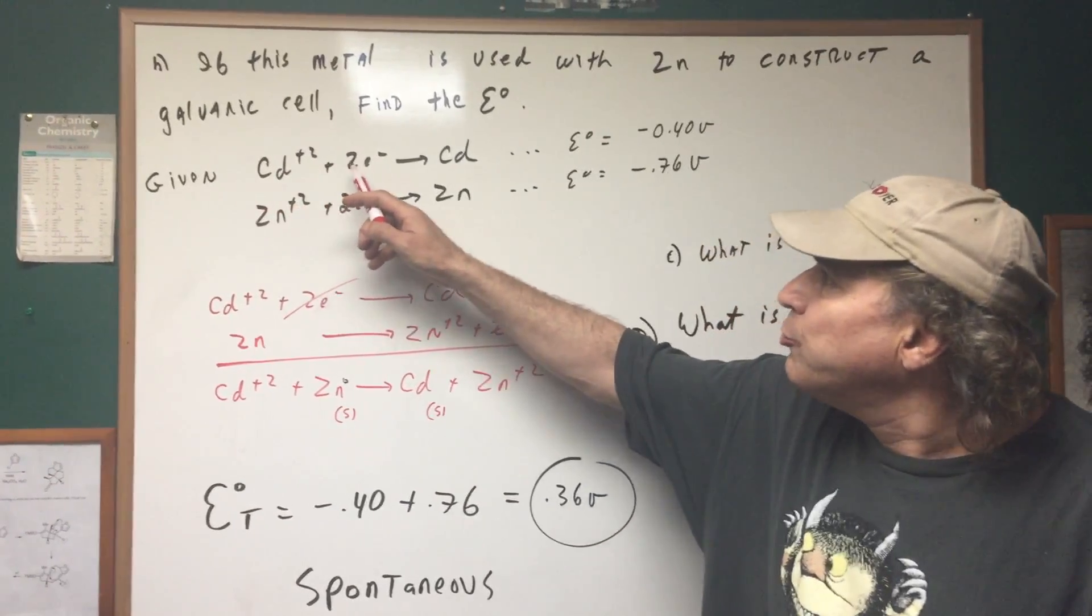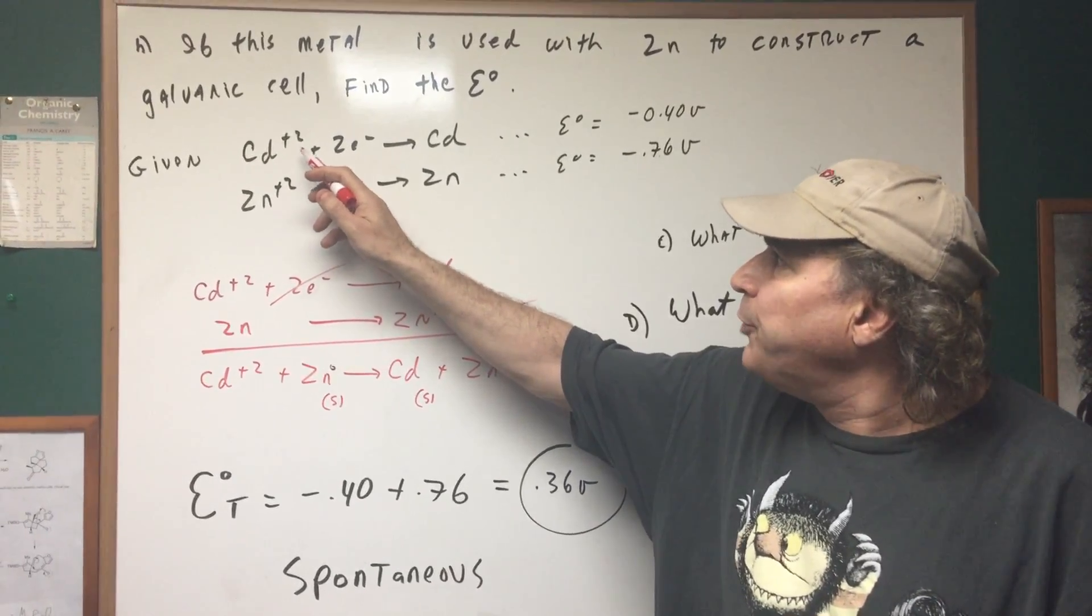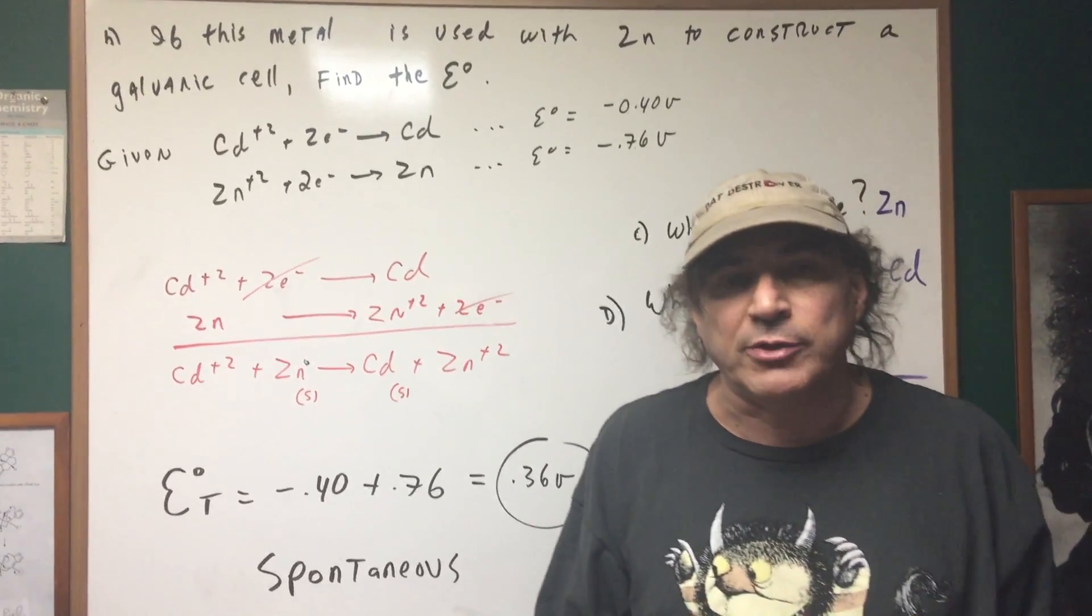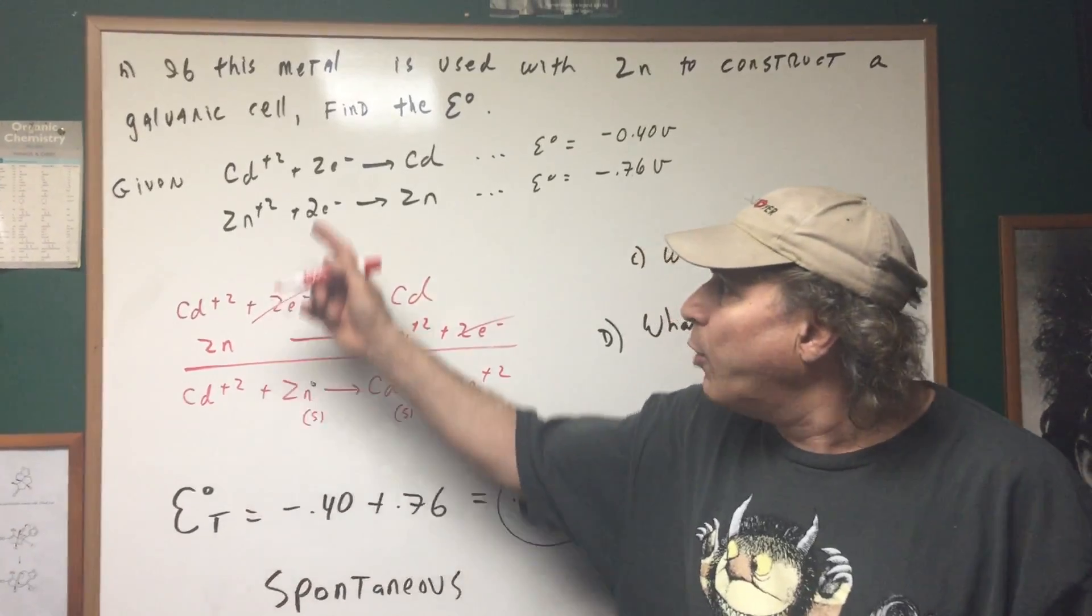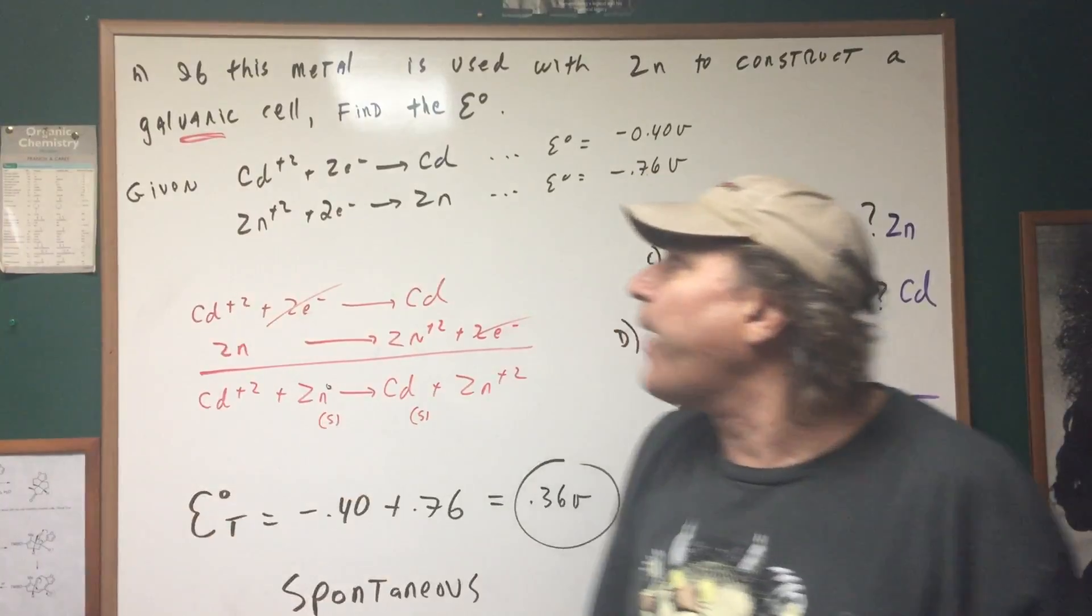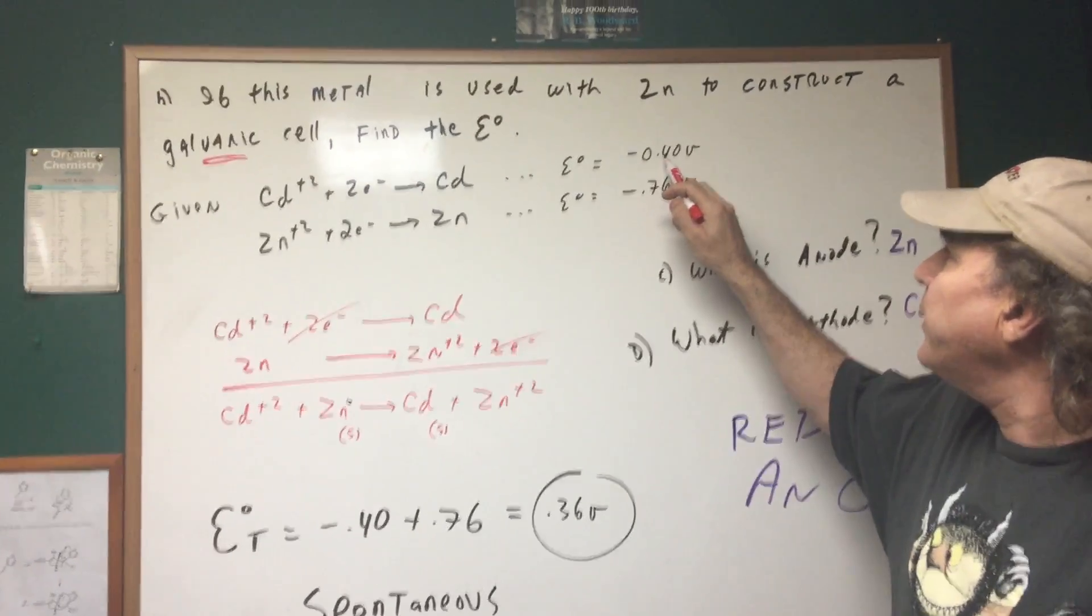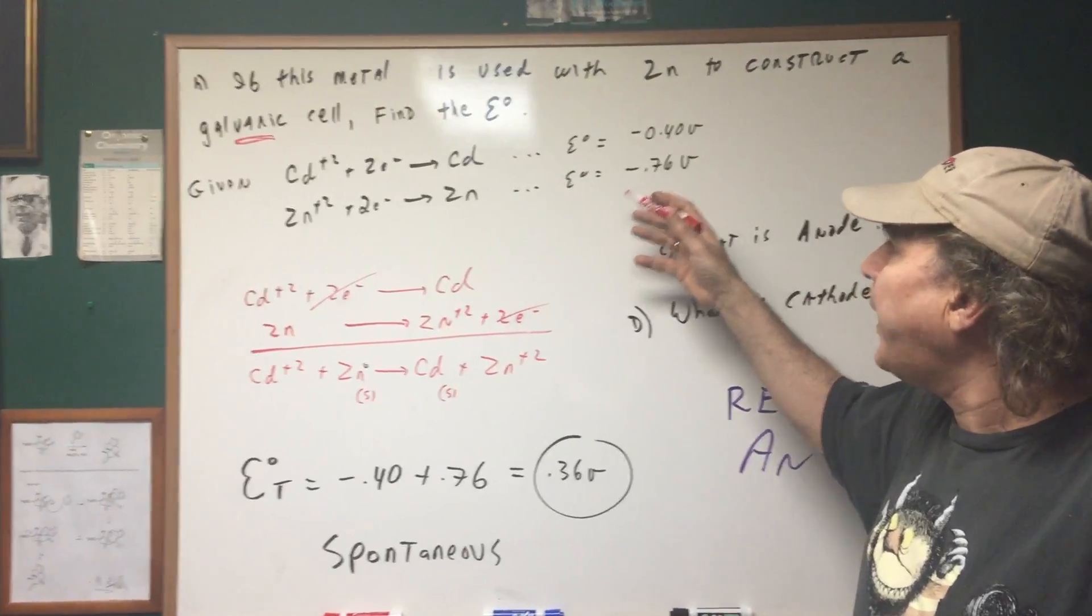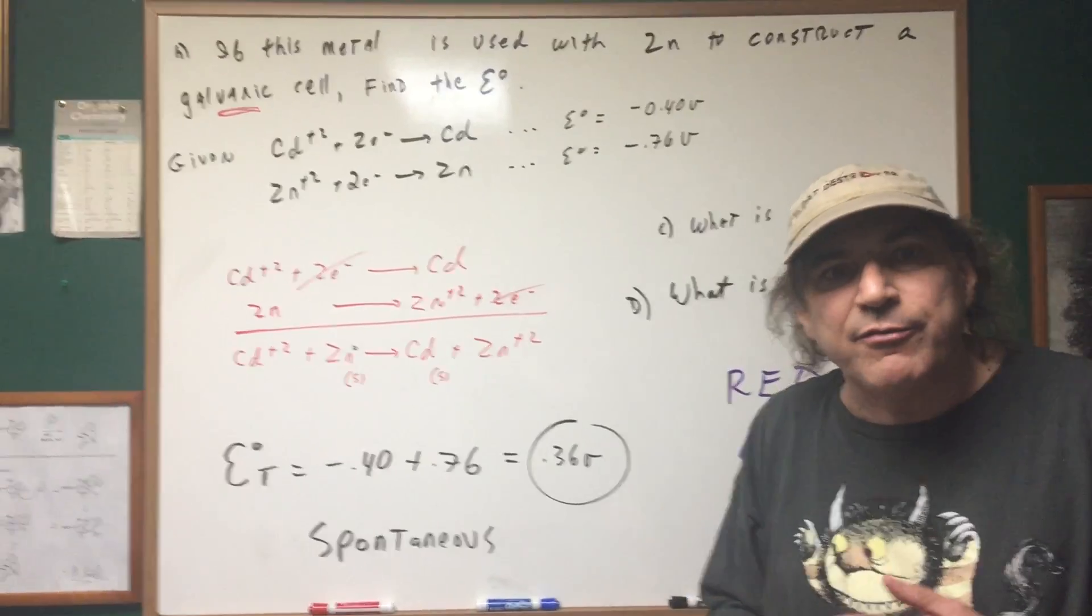I gave you the reduction potentials of cadmium and of zinc. Now if you notice both of these are in terms of reductions. You can't have two reductions. When you have an electrochemical cell one's a reduction and one's an oxidation. So one of these has to be reversed. Which one? Well it says it's a galvanic cell which means it has to be positive. So if you reverse this one you would have a positive here and then this is a negative and that would make it overall negative.